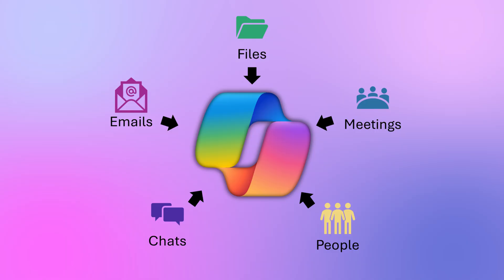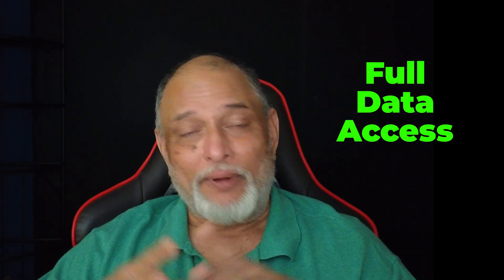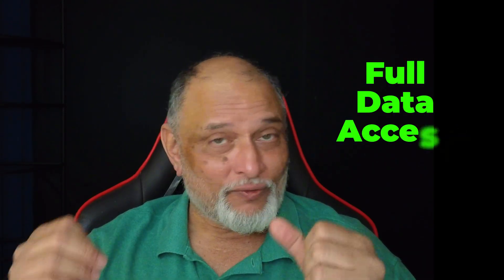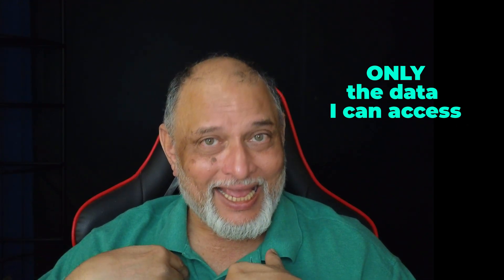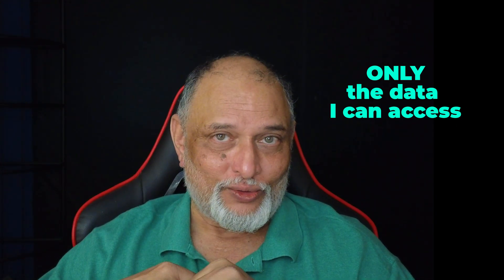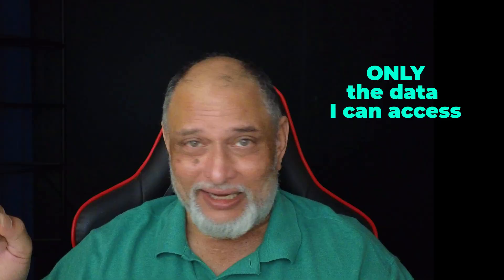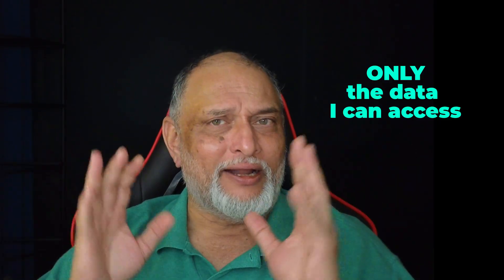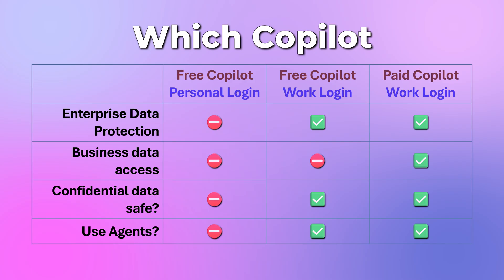In the paid version, you also get access to all Power BI reports — safety plus access to data. Which data? Only the data that you as a user have access to. If you don't have access to a file, Copilot doesn't have access to that file either. So those are the three methods of using Copilot. Show this to your colleagues, your IT team, and your compliance team, and make sure everyone gets access to the free version at least, with enterprise data protection.